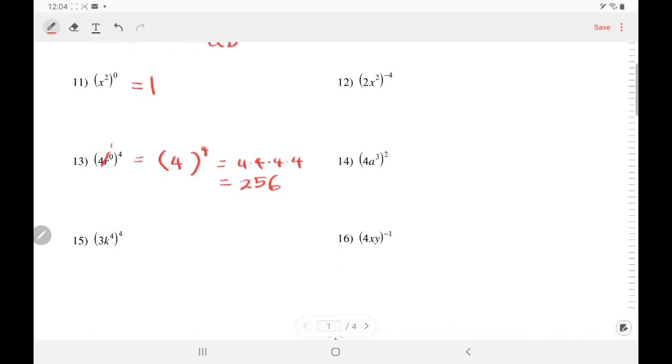In number 15, we have to distribute the exponent. So 3 to the 4th power, and then K. Use the power rule: you multiply the exponents, that would be 16. 3 to the 4th power, you could use your calculator, that would be 81, K to the 16th.